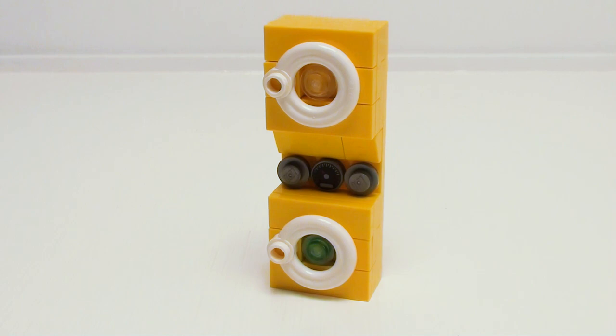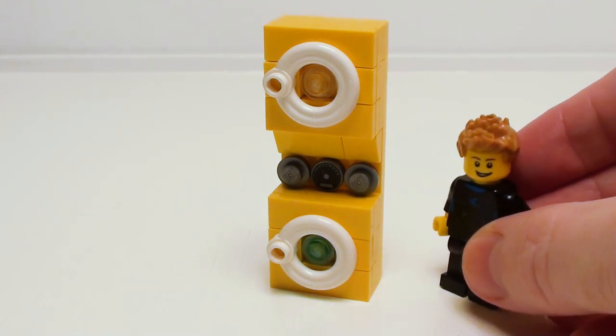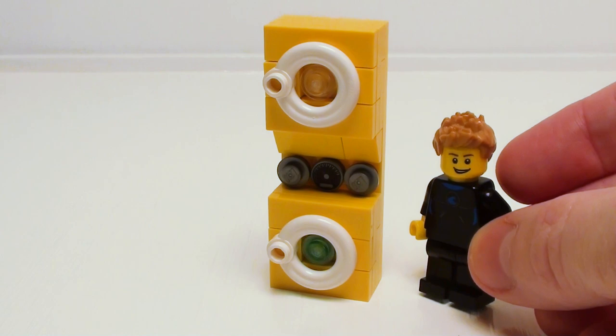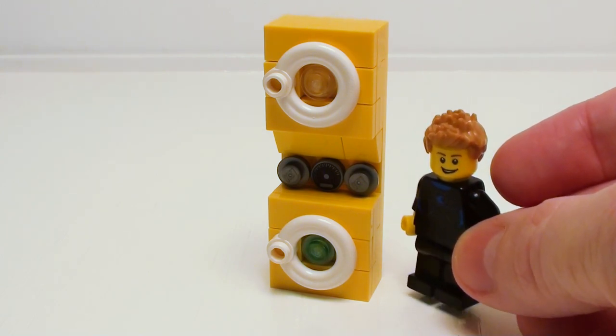And here is the stacked washer and dryer combo. As you can see, it's almost the right height for Jay the Surfer. He may need to have a step stool to get up to the dryer.